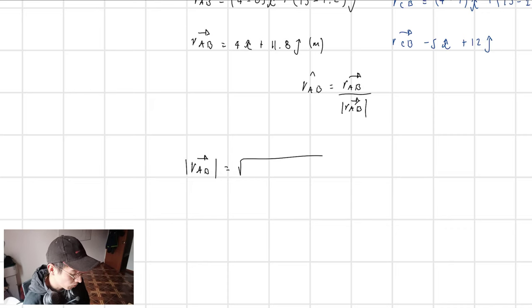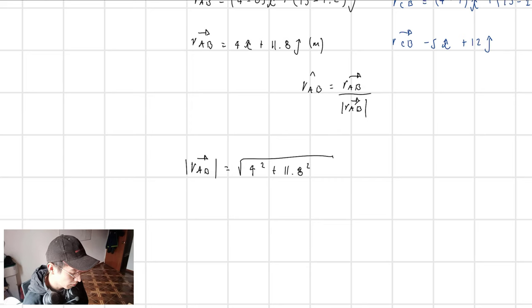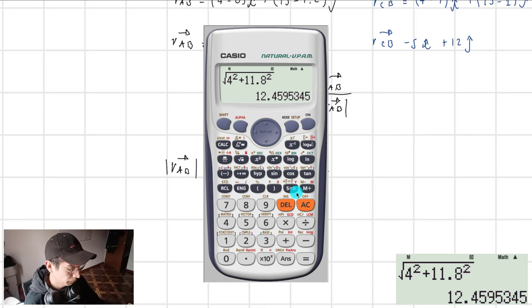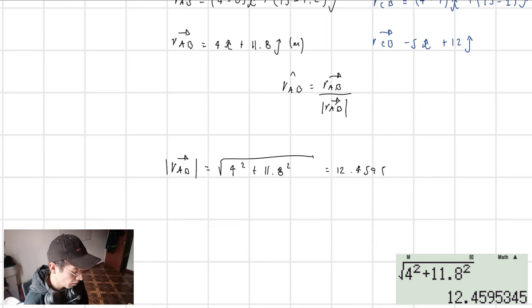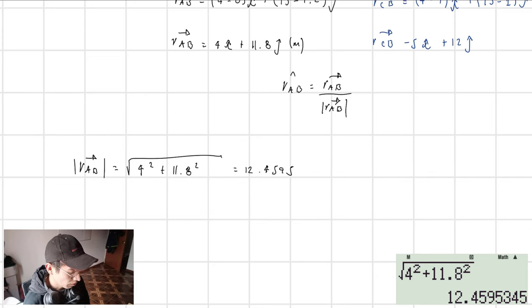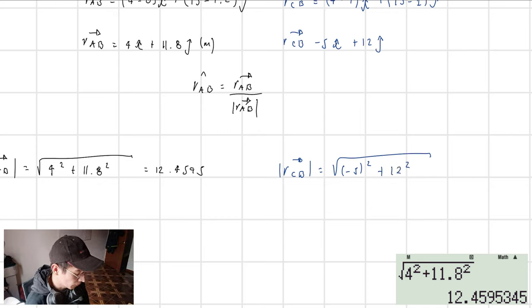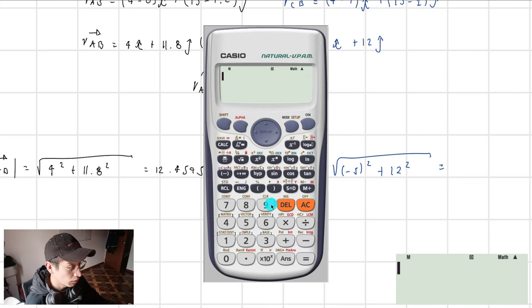The magnitude of the vector is equal to the square root of every single one of the components squared. So the magnitude of R_AB equals the square root of 4 squared plus 11.8 squared, which equals 12.4595. The magnitude of R_CB equals the square root of minus 5 squared plus 12 squared, which equals 13.